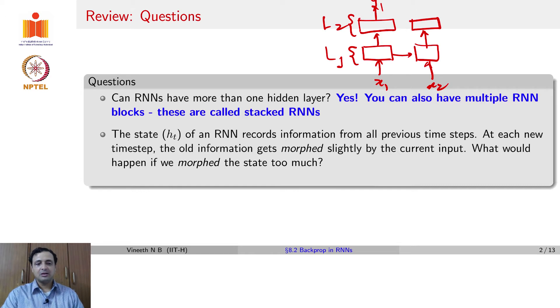Going forward, we asked the question, given that the state of an RNN records information from all previous time steps, what would happen if we morph the state at a given time too much with the current input?